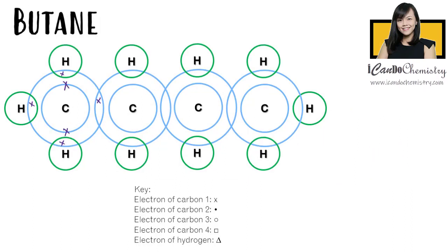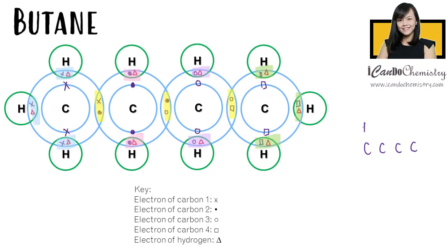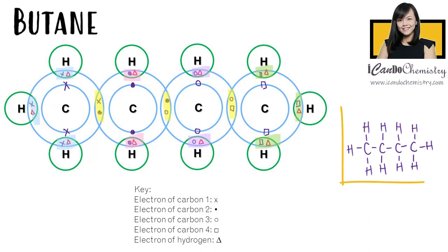Lastly, we have butane, which has four carbons and ten hydrogens. All four carbons share electrons with one another. Then each carbon shares their remaining electrons with hydrogen. Let's replace the electron pairs with a bond. We have achieved the structure of butane.